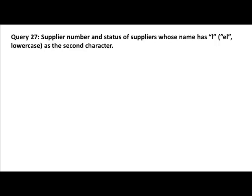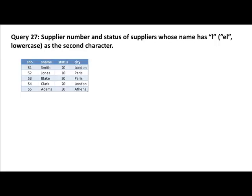Now: give me the supplier number and status of suppliers whose name has a lowercase l as the second character specifically. This time we cannot just use the percent wildcard character, because percent matches zero or more characters. If I say percent L percent, that will match wherever L occurs — but we want L to occur exactly as the second character. So the percent wildcard character is not going to help here.